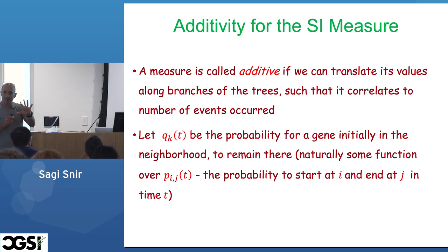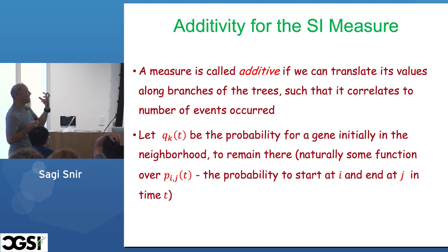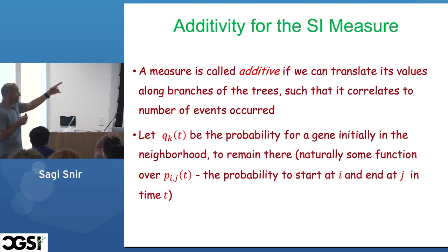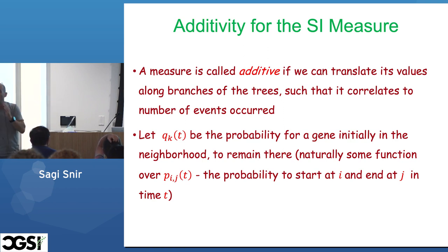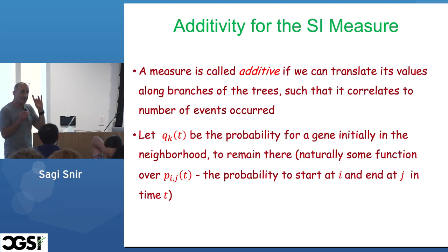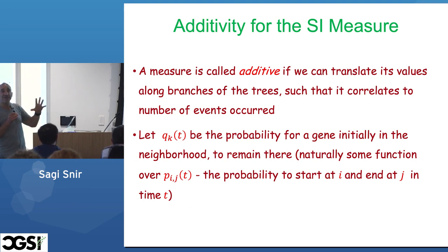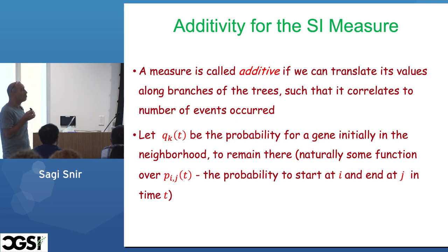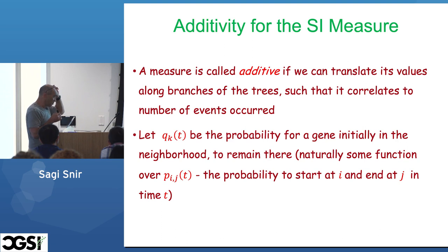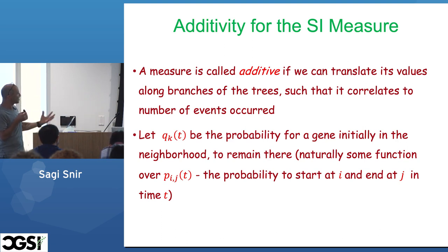Back to biology: additivity of the SI measure. A measure is called additive if we can translate its values — like mutations, like the Synteny index — along branches of a tree such that it corresponds to the number of events that occurred. These corrections for mutation have existed for many years from classical work by Joe Felsenstein, Kimura, and others. But can we say something about SI?